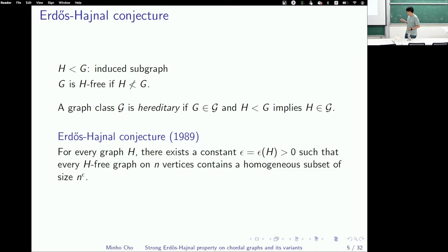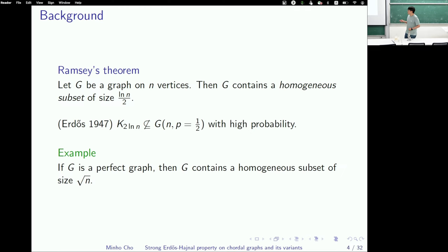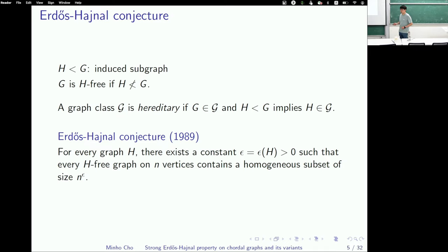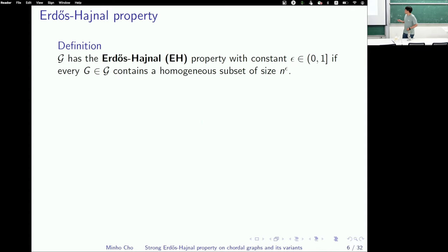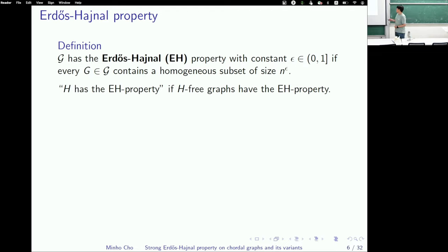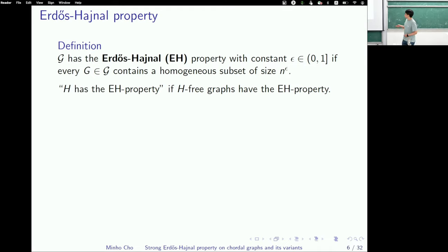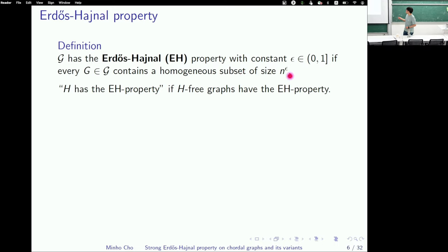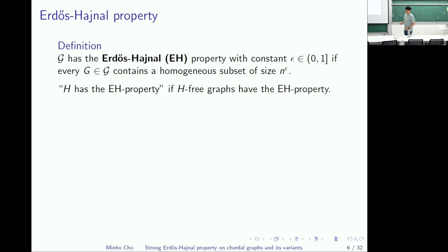As in the case of perfect graphs, if I forbid a graph as an induced subgraph, then every graph should contain a polynomial-size homogeneous subset. I say a graph class G has the Erdős-Hajnal property if it satisfies this conclusion. If there's a constant such that every graph in the class on n vertices contains a homogeneous subset of size n to that constant, then the class has the EH property.